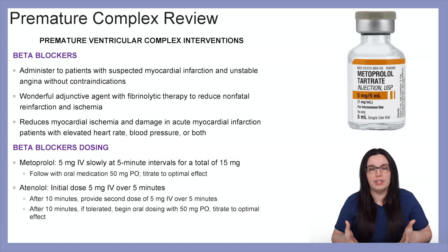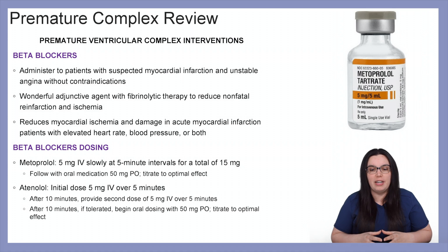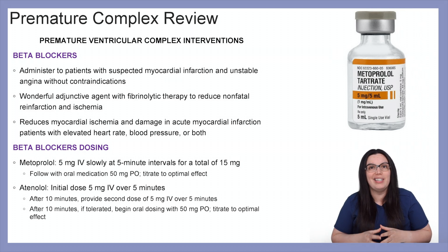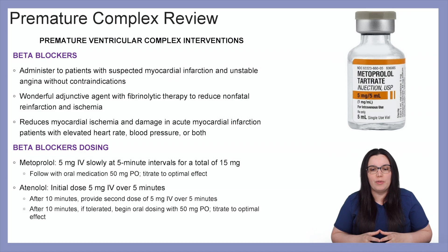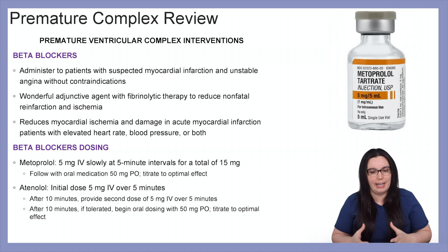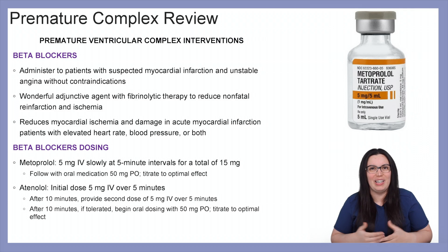For dosing, metoprolol is given 5 mg IV slowly at 5-minute intervals for a total of 15 mg, followed by oral medications of 50 mg PO, titrating until we get the optimal effect. For atenolol, the initial dose is 5 mg IV over 5 minutes. After 10 minutes, provide a second dose of 5 mg IV over 5 minutes again. After the next 10 minutes, if they are tolerating it, begin oral dosing with 50 mg PO, titrating until optimal effect.